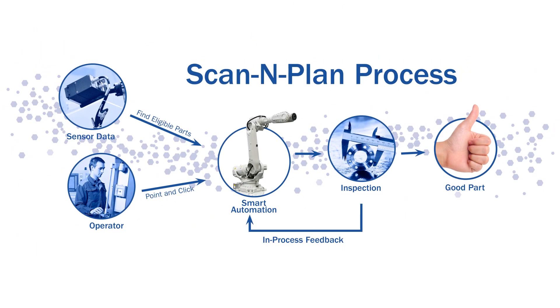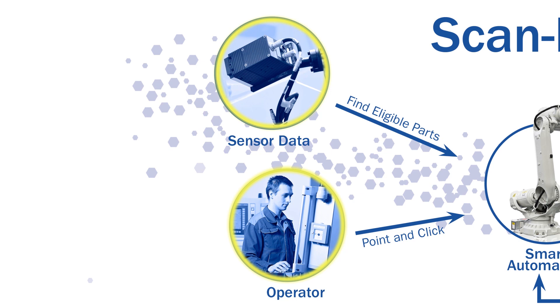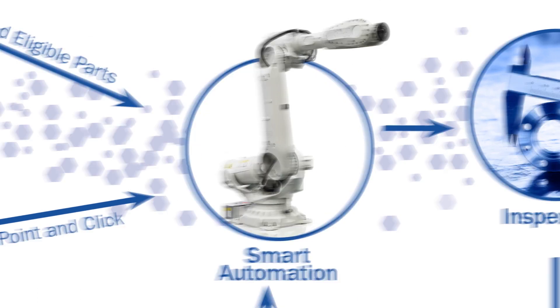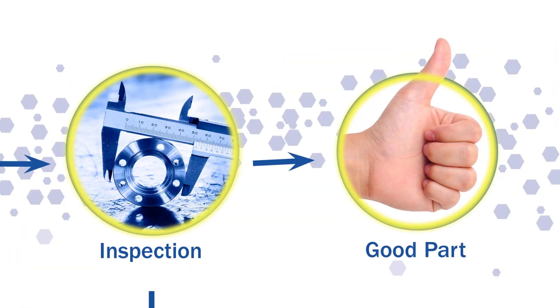The Scan and Plan process allows a human operator to select eligible parts in a robot's workspace, and the software takes over, automatically generating tooling paths and robot trajectories, executing them, and even quality assuring them.